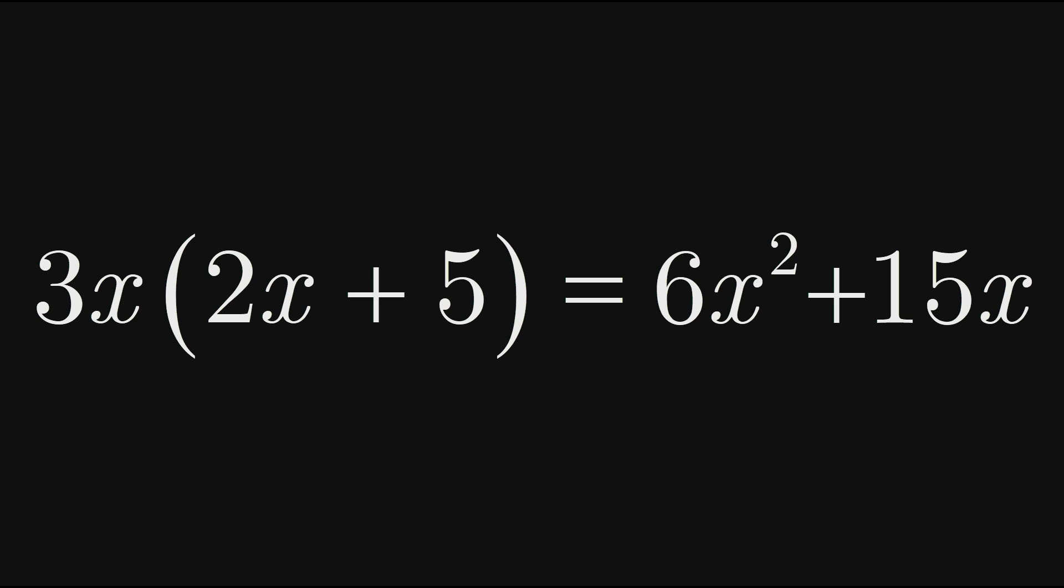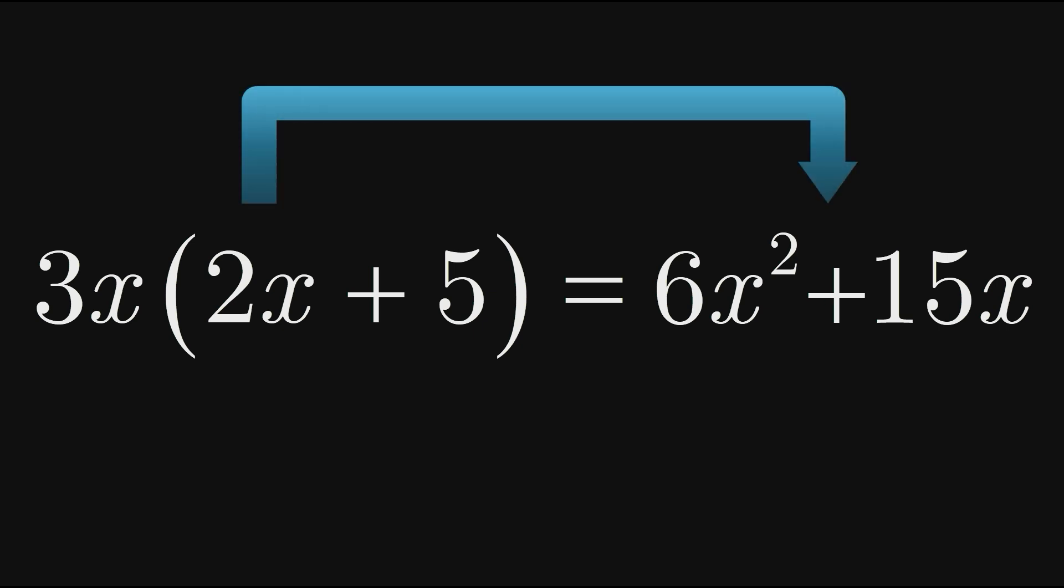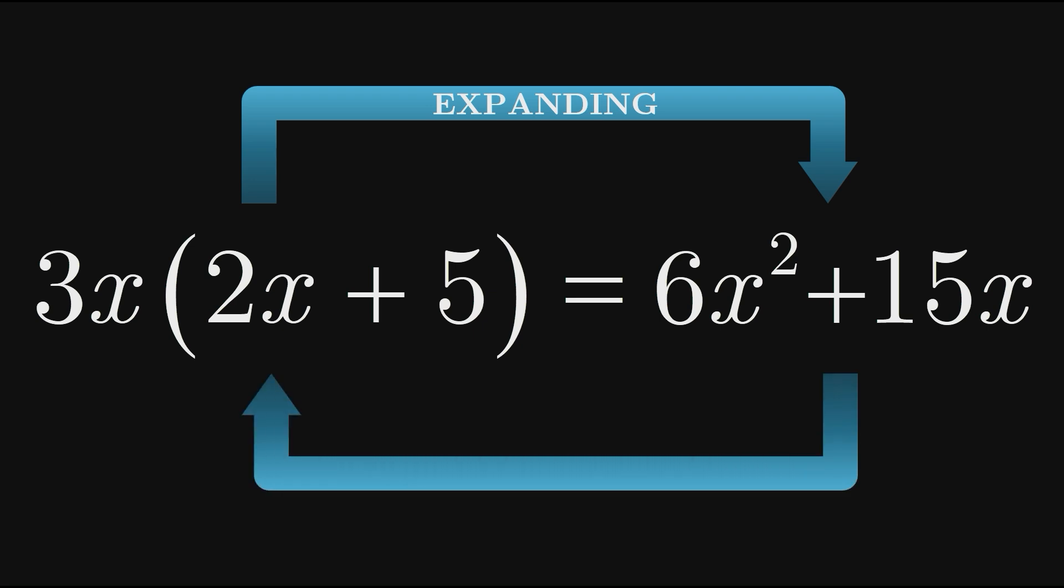Using multiplication to move from the expression on the left here to the expression on the right is called expanding. Factoring is the process that takes us from the expanded expression on the right back to the factored version on the left. Notice that factoring is the opposite of expanding.